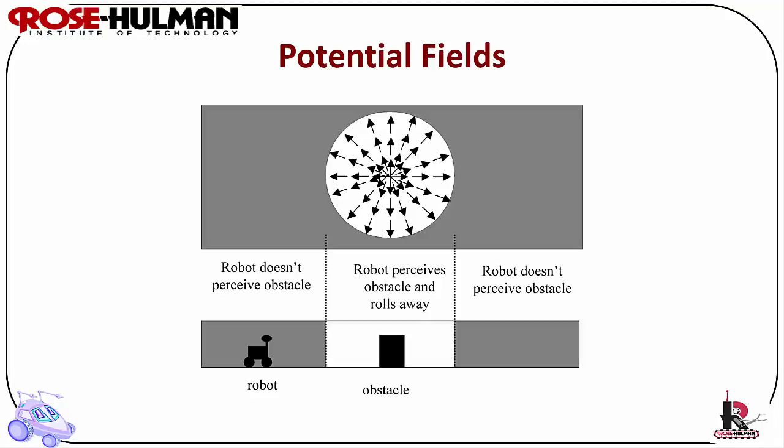The motor schema can be expressed with potential fields methodology. A potential field can be constructed from primitives summed together, and behavior outputs are combined using vector summation. The robot feels a vector or force from each behavior — both the magnitude and the direction. Every point in space represents a force as a field that the robot would feel at that point.